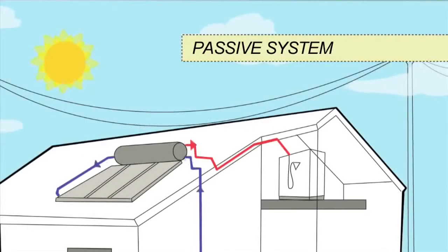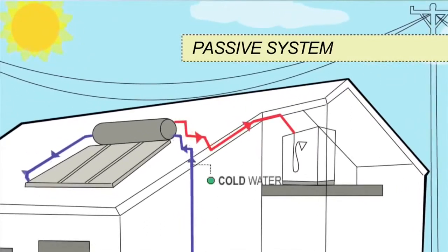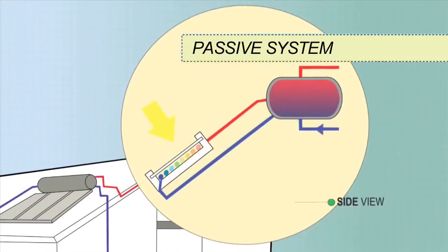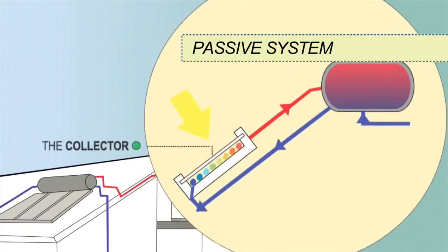In passive systems, also known as thermosiphon systems, the tank sits above the collectors. Cold water sinks into the collectors whilst warmer water rises unassisted from the collectors into the tank.